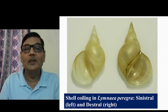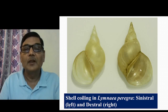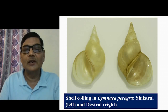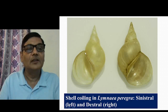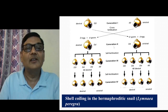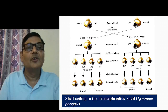Dextral type of coiling is known as right-handed coiling. Here you see this is the opening of the shell, and if you hold a snail in your left hand facing its opening towards your face, you will find that this opening of the shell will be towards the right side. In case of sinistral coiling, this opening of the shell is towards the left side. This is the way you can identify the dextral and sinistral type of Limnea.